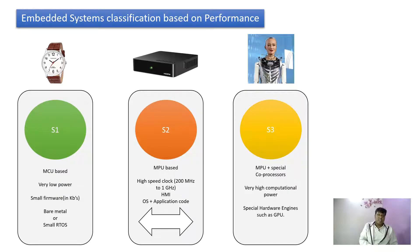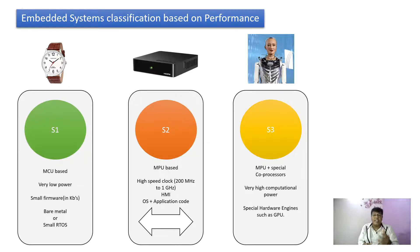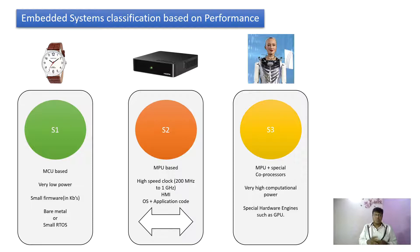Adding more additional features to an S1 system gives us an S2 system. An S2 system is a microprocessor-based system that runs on a processor and has an operating system, for example Linux-based systems. These systems operate at very high frequencies ranging from megahertz to gigahertz and have much more computation power compared to S1 systems. An example of an S2 system could be a set-top box running Linux with a human-machine interface.